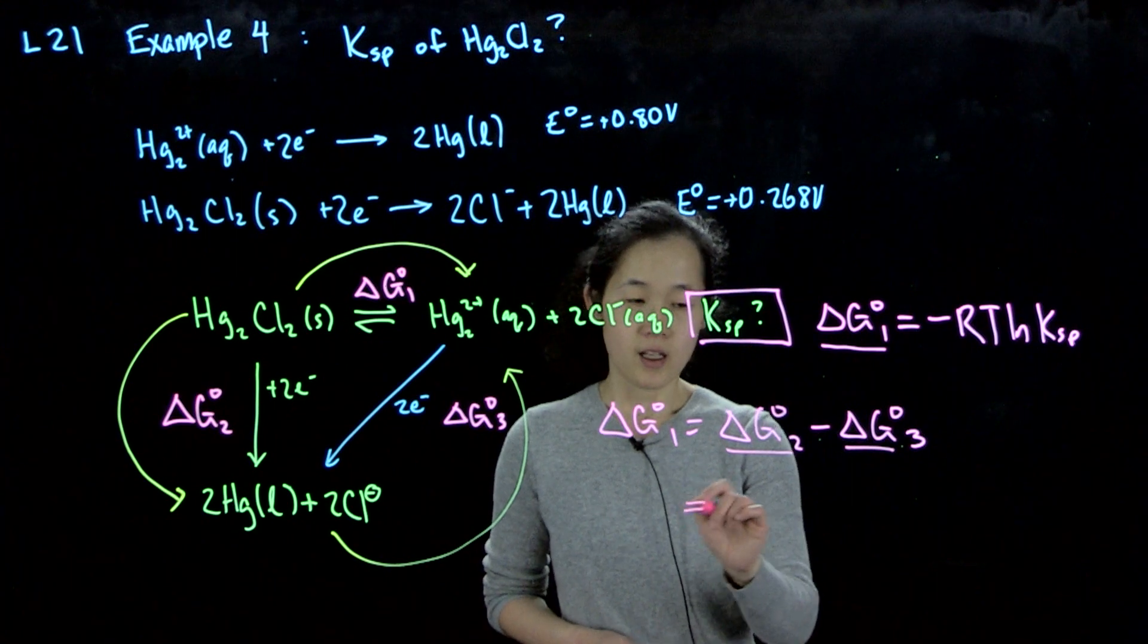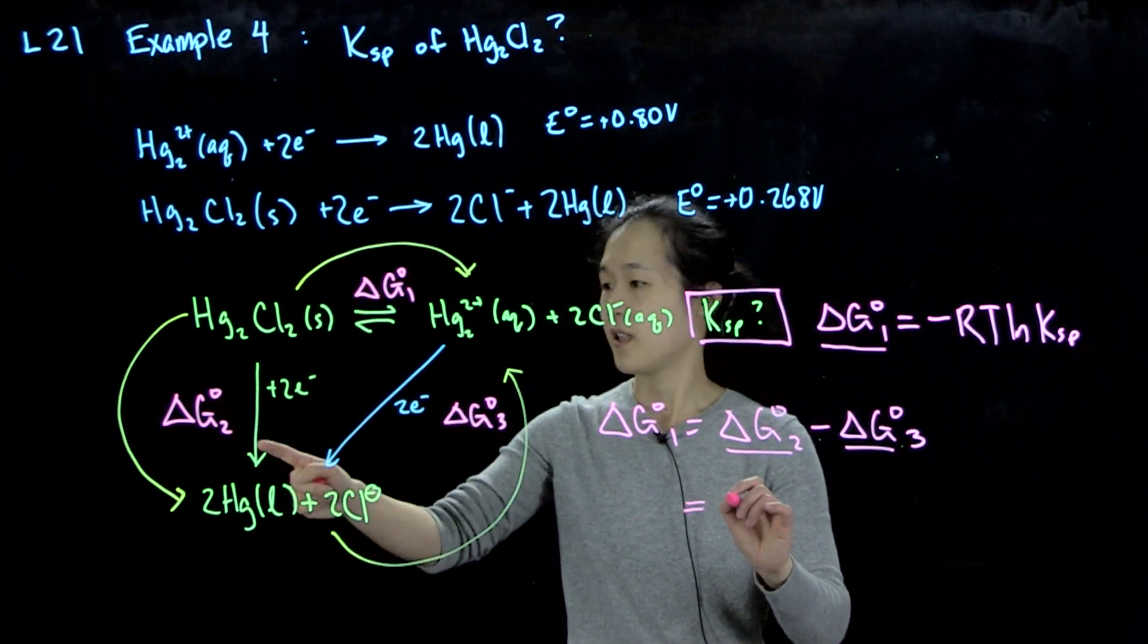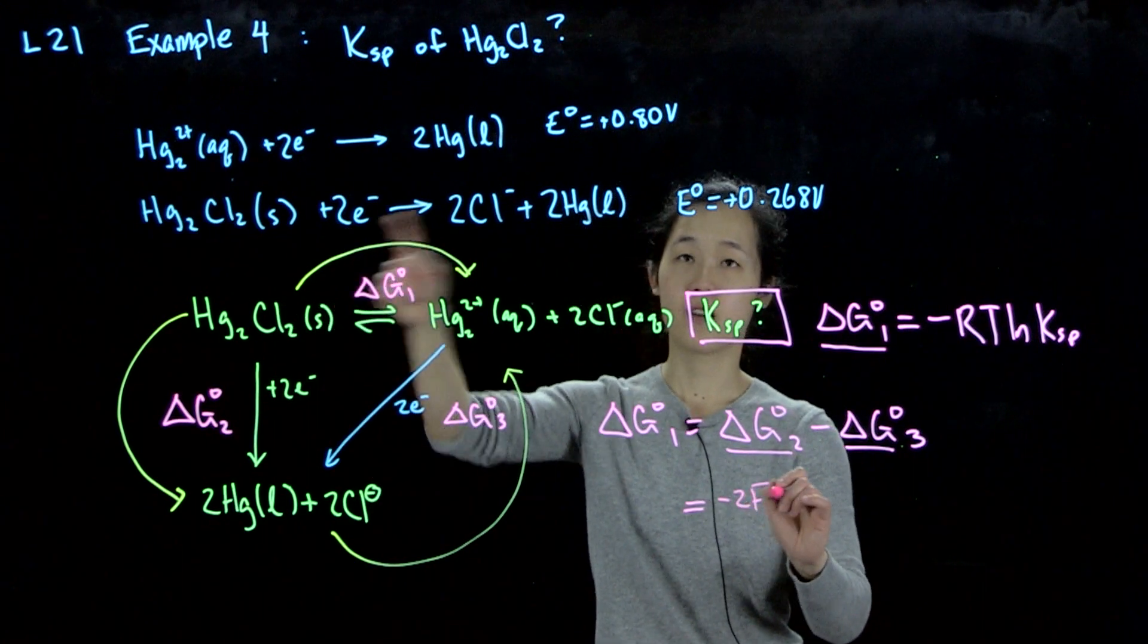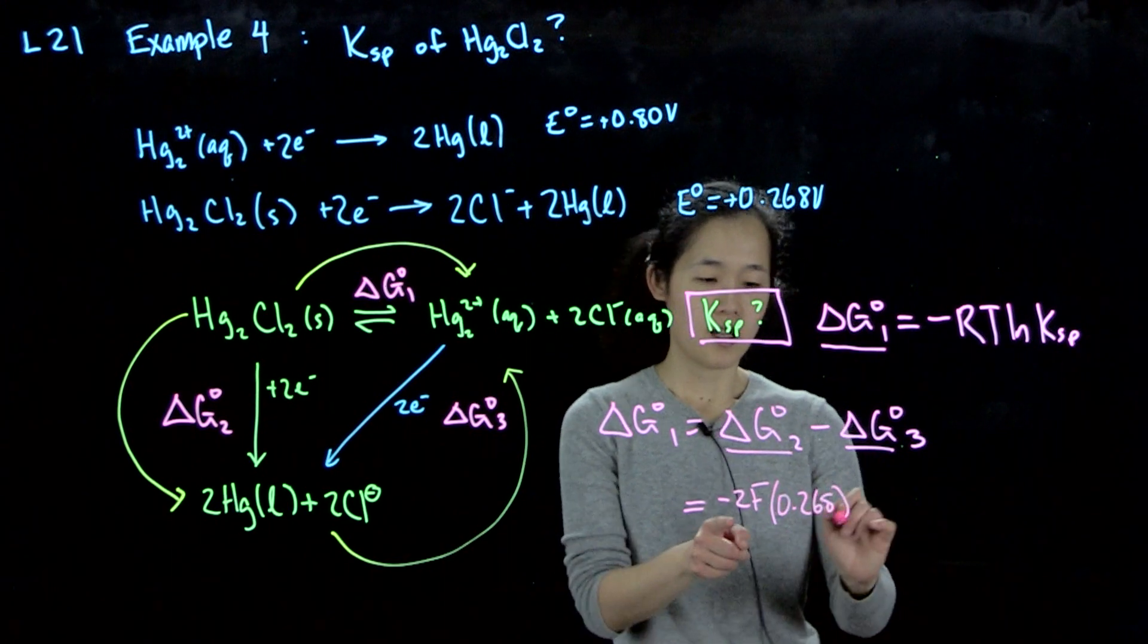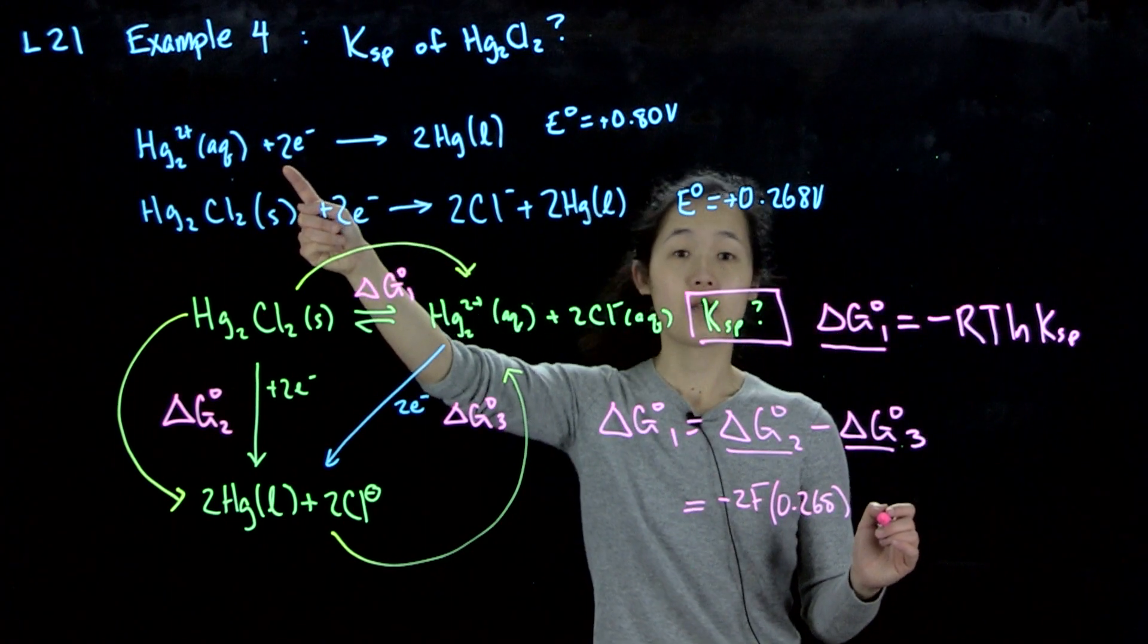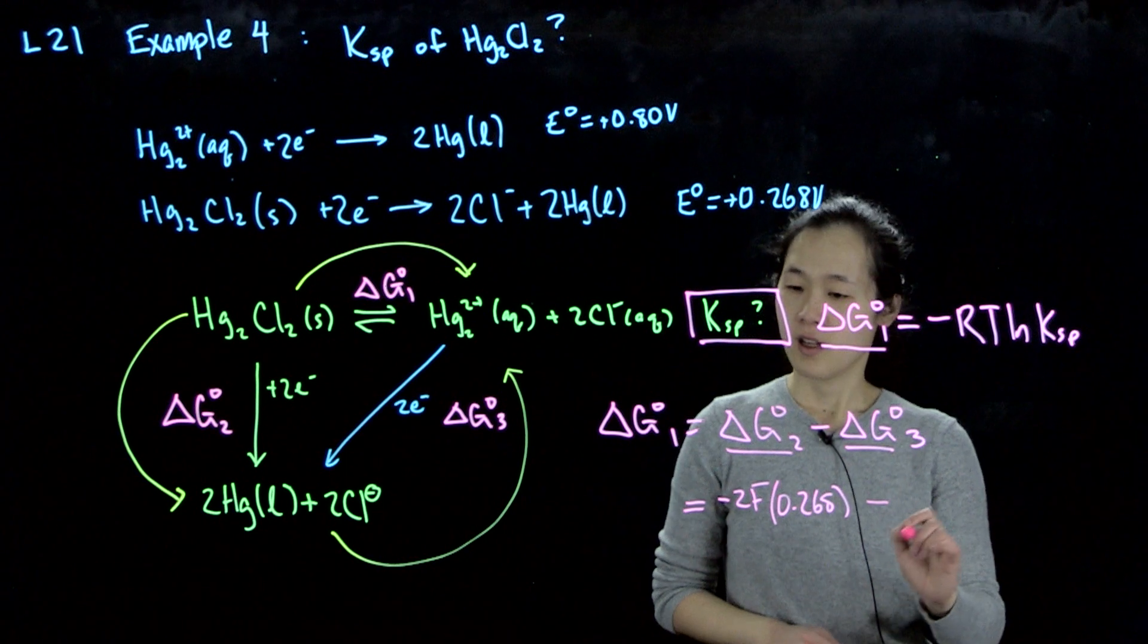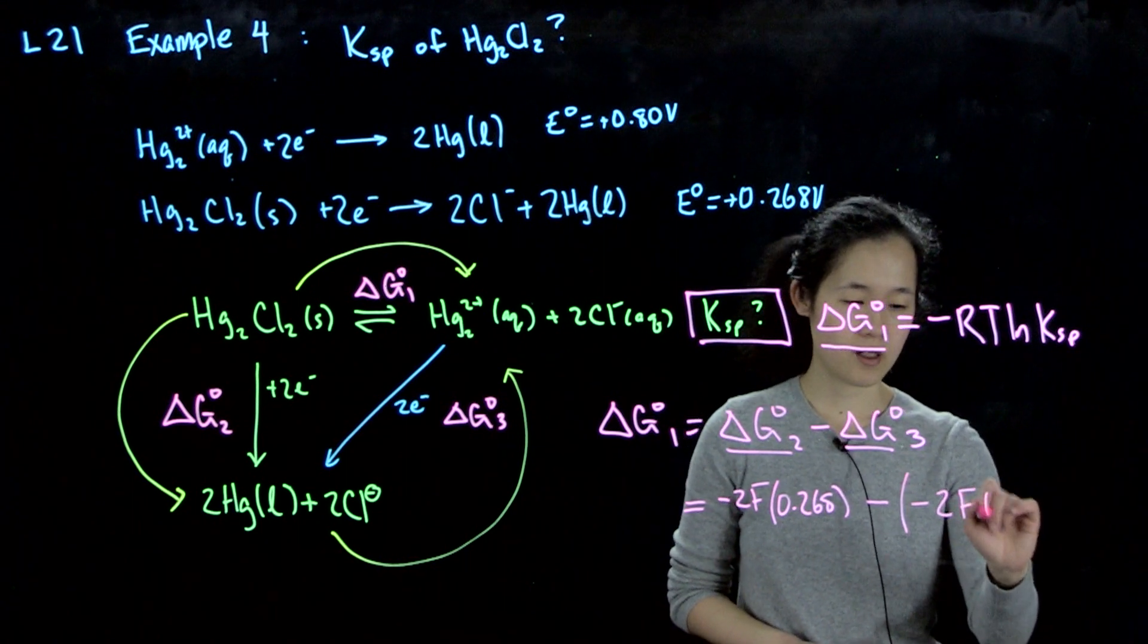So then we can say that delta G0 2 is going to be equal to, this is a two electron process, so this will be negative 2F times E0. So this will be 0.268. And then delta G0 3 is going to be, again, a two electron process. This potential is 0.8. So we'll be subtracting negative 2F times 0.8.